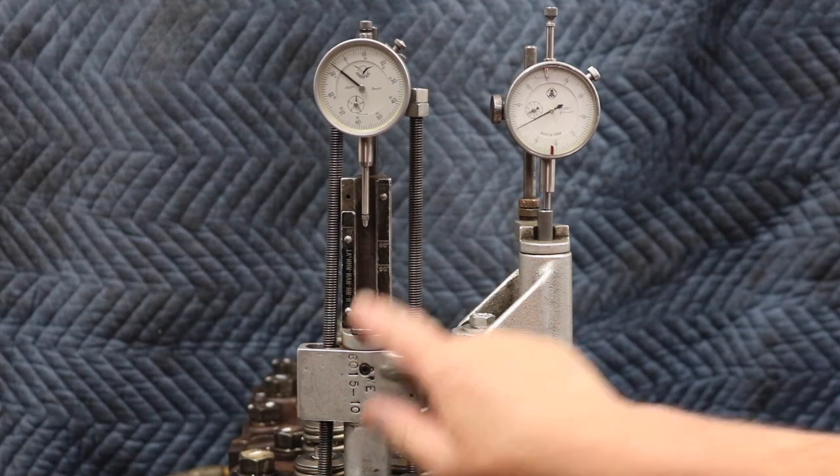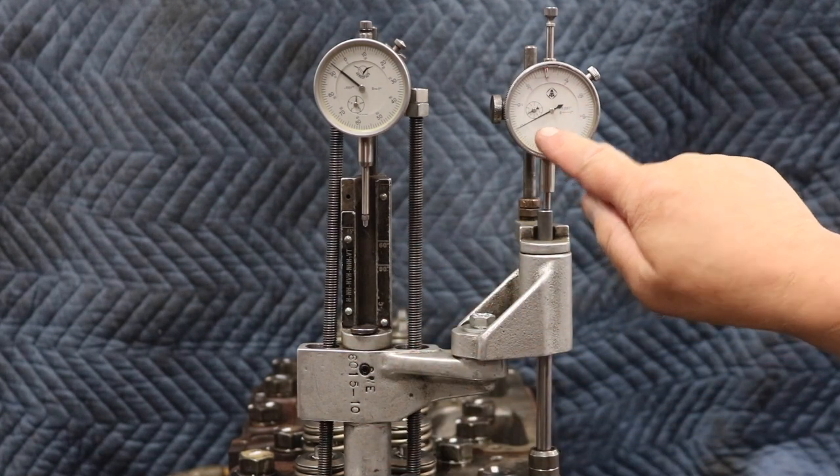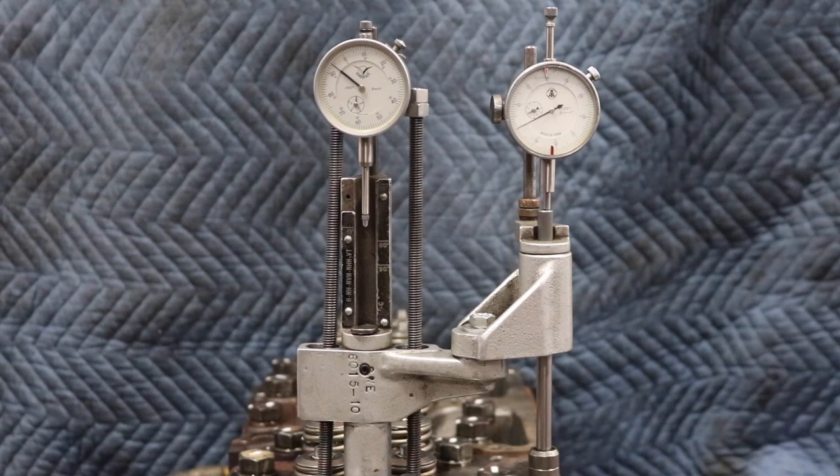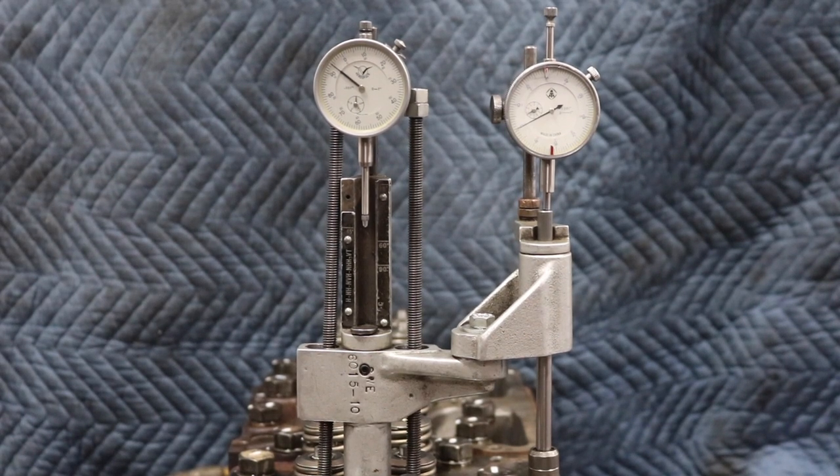We bring this down to the bottom just to make sure we got enough travel and we're at the right zero on here. Now that was direction of rotation with the crankshaft. Now we're going to go opposite direction of rotation with the crankshaft.